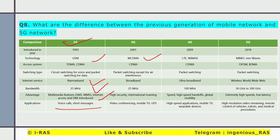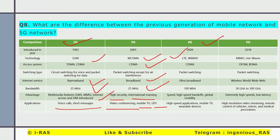3G worked on WCDMA technology and also used CDMA and GSM. It was known as broadband and used bandwidth of more than 25 MHz. Advanced features of this generation included high security, international roaming, video conferencing, mobile TV, and GPS. Then came 4G, also known as Long Term Evolution (LTE). It uses packet switching, is known as ultra-broadband, and the bandwidth it uses is more than 100 MHz. The more the bandwidth, the more the speed and clarity. Advantages include high speed, global mobility, high-speed applications, mobile TV, and wearable devices.